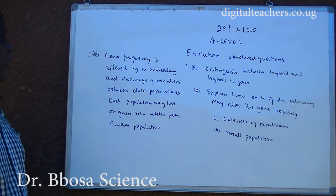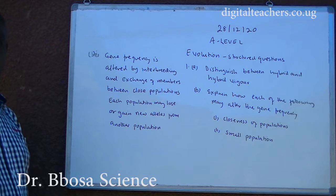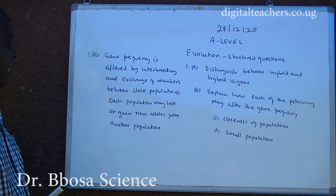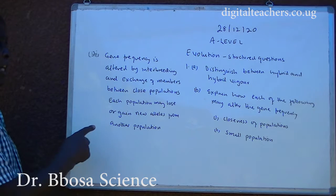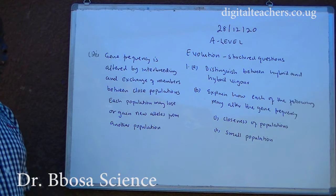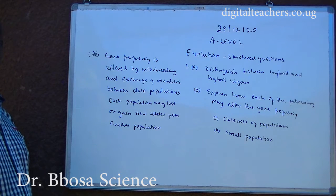Hybrid vigor refers to phenotypes of hybrids showing characteristics which are superior to either of the parental strokes. B. Gene frequency is altered by interbreeding and exchange of members between close populations. Each population may lose or gain new alleles from another population.